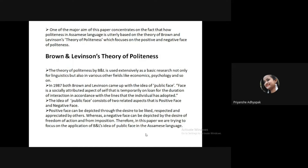The theory of politeness by Brown and Levinson is used extensively as basic research not only for linguistics but also in various other fields like economics, psychology and so on. In 1987, both Brown and Levinson came up with the idea of public face. Face is a socially attributed aspect of self that is temporarily on loan for the duration of interaction in accordance with the lines that the individual has adopted. The idea of public face consists of two related aspects: positive face and negative face.